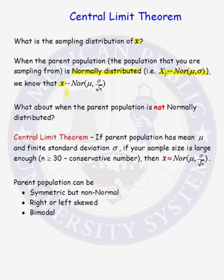The standard deviation of our sample mean is equal to the standard deviation of our parent population divided by the square root of our sample size. So the standard deviation of our sample mean decreases as our sample size increases.